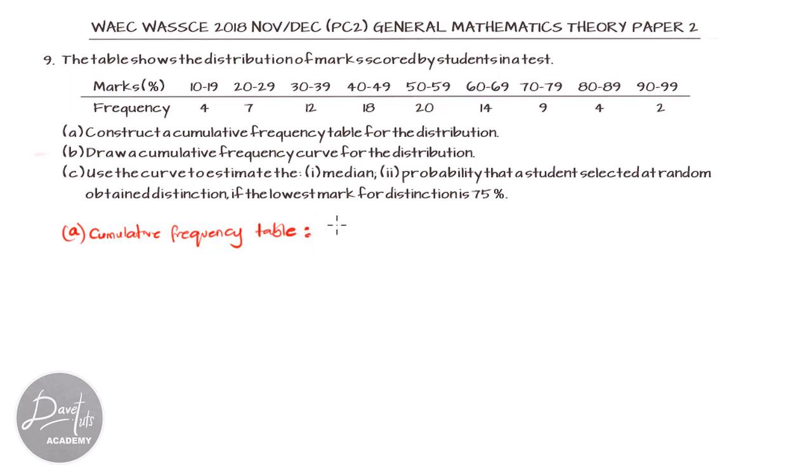In our first assignment, we want to get the cumulative frequency table. The features of the cumulative frequency table will involve the marks, the class boundary, the frequency, then the cumulative frequency. So we have the marks, the class boundary with lower and upper class boundary, the frequency, and the cumulative frequency.